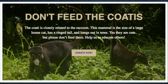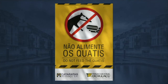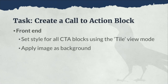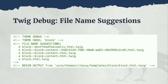Here's the block we're going to create — to raise money and generate awareness about feeding wildlife, like the coatis on the side of the road begging for food. Our task is to set a style for all CTA blocks using the tile view mode. We look at our file name suggestions — but does anybody see where the block type is? The CTA block? The tile view mode? It's not there. What am I supposed to do with this?